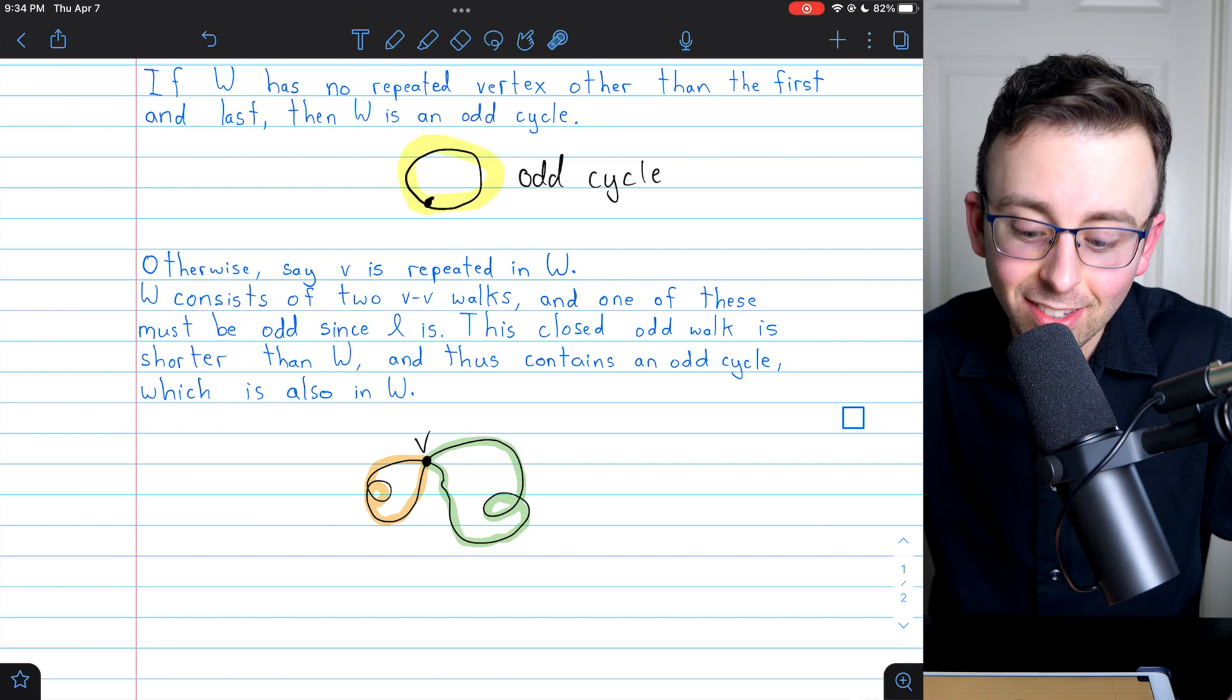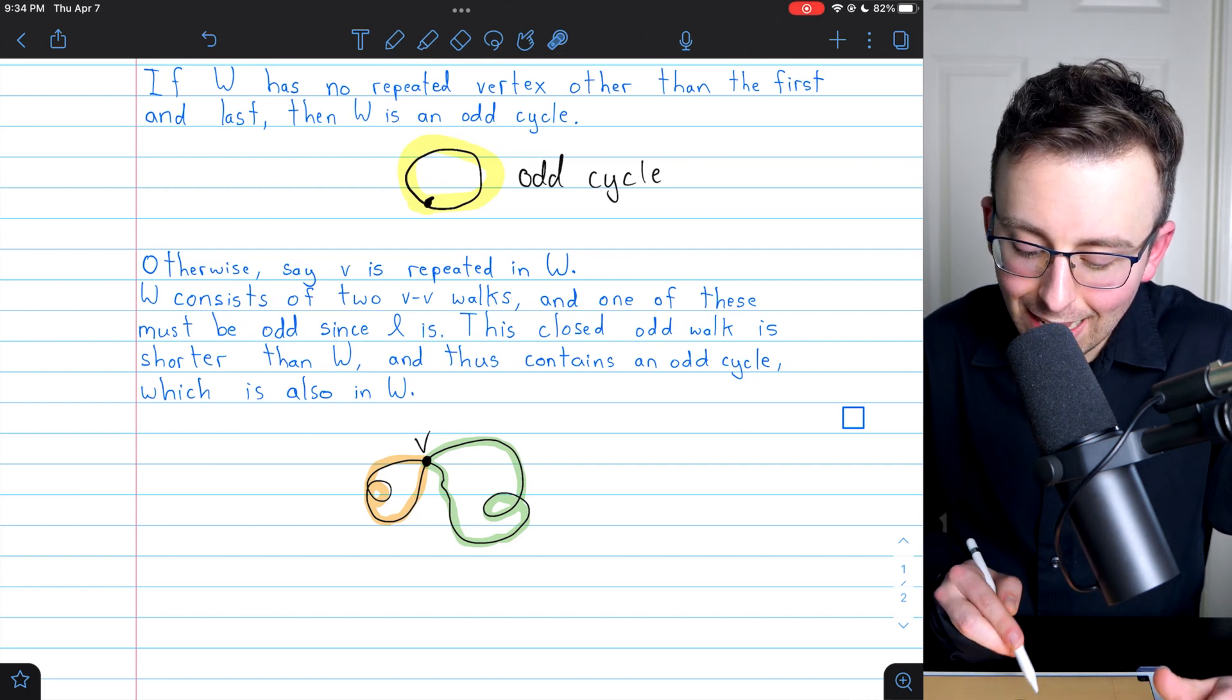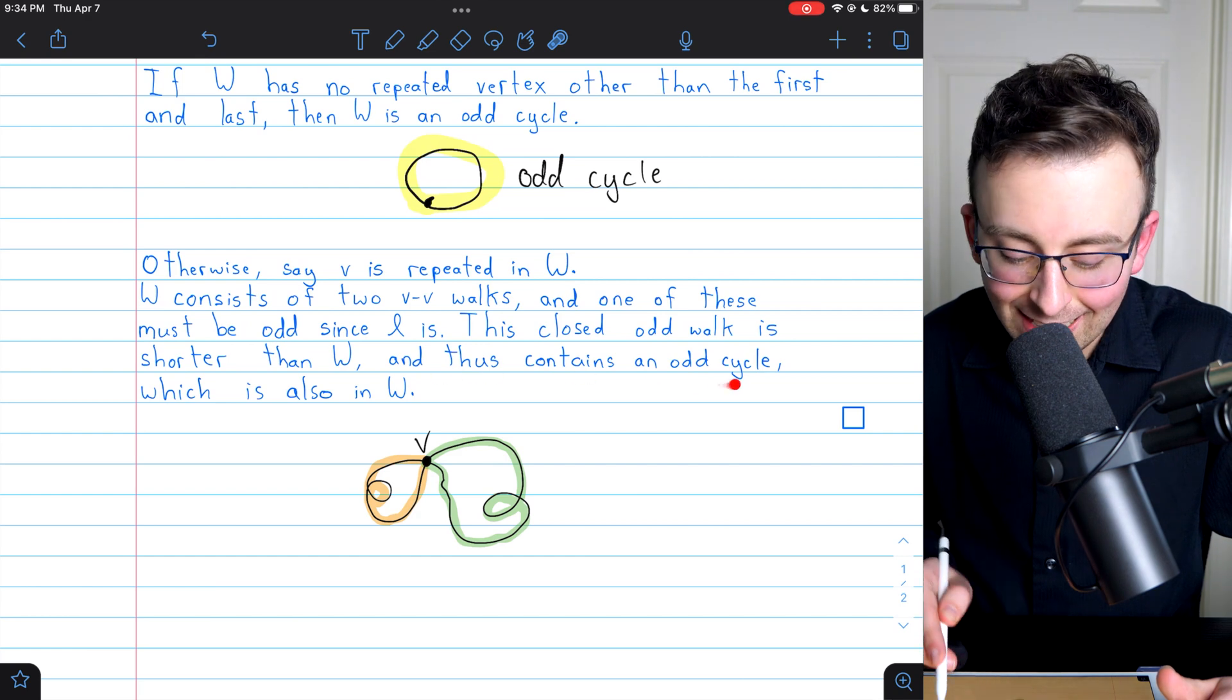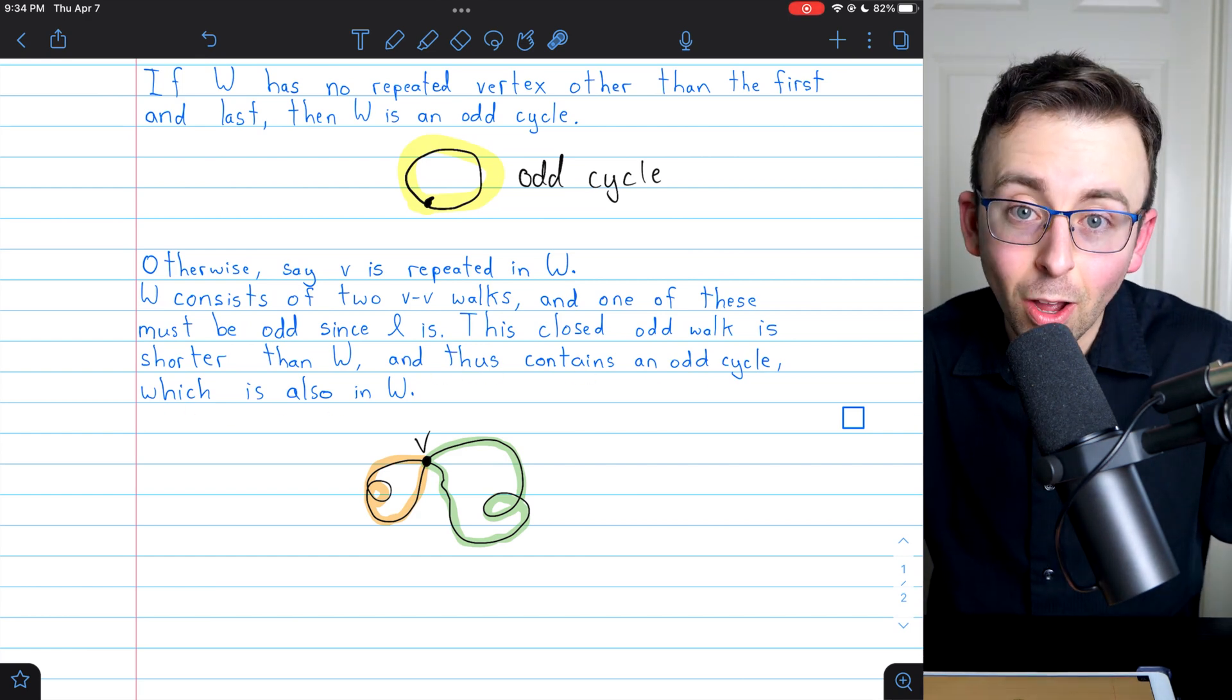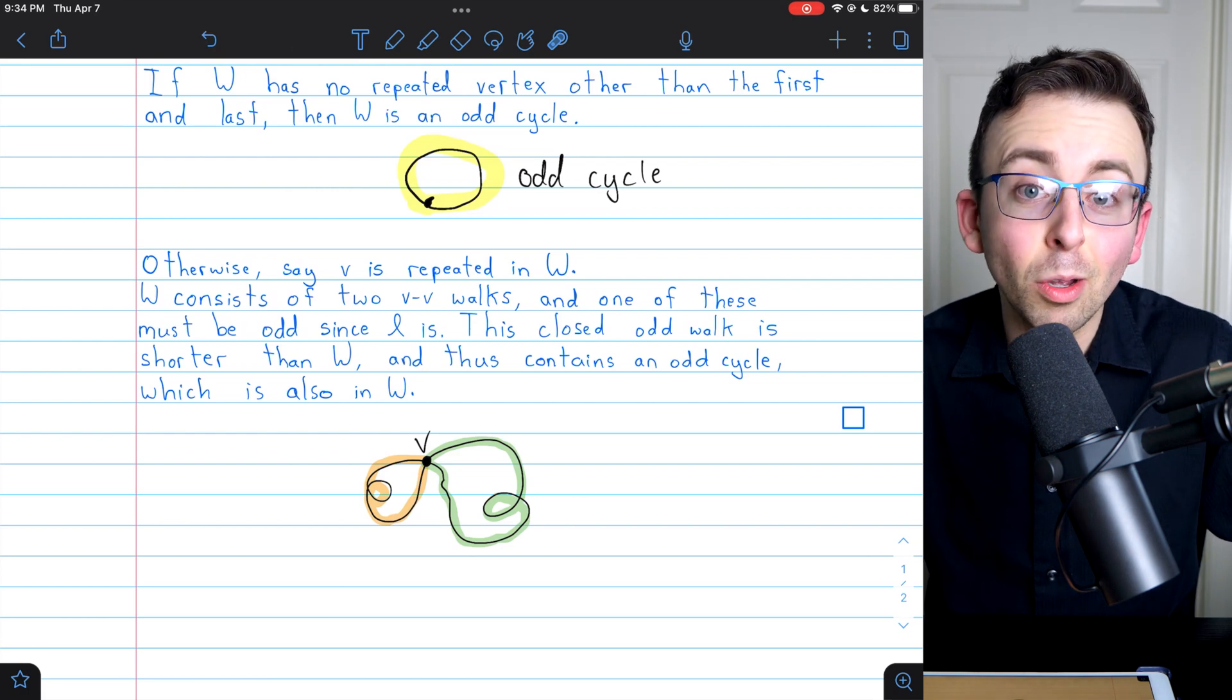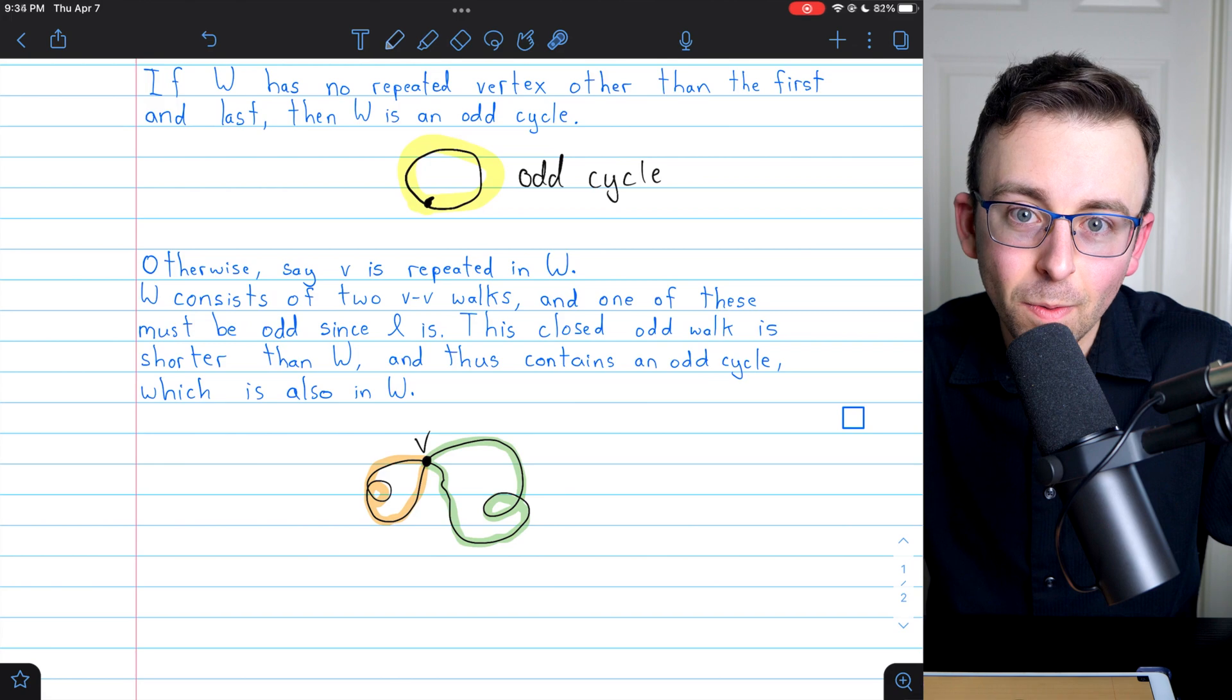It's got to have an odd cycle. So the closed odd walk, the one highlighted in green, it's got to contain an odd cycle, and of course, that odd cycle is also in W. So W has to have an odd cycle. So that's the proof.